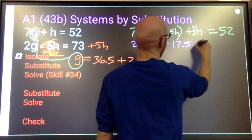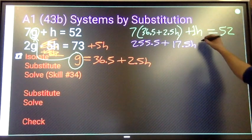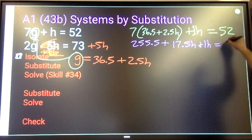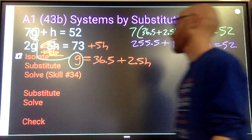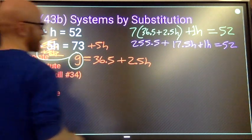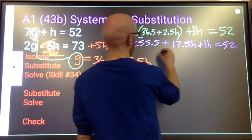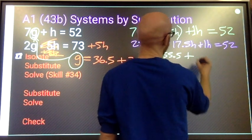That's distributing my 7. Plus we have this 1h equals 52. Combine like terms. 255.5h, and we got 255.5 plus 18.5h equals 52.